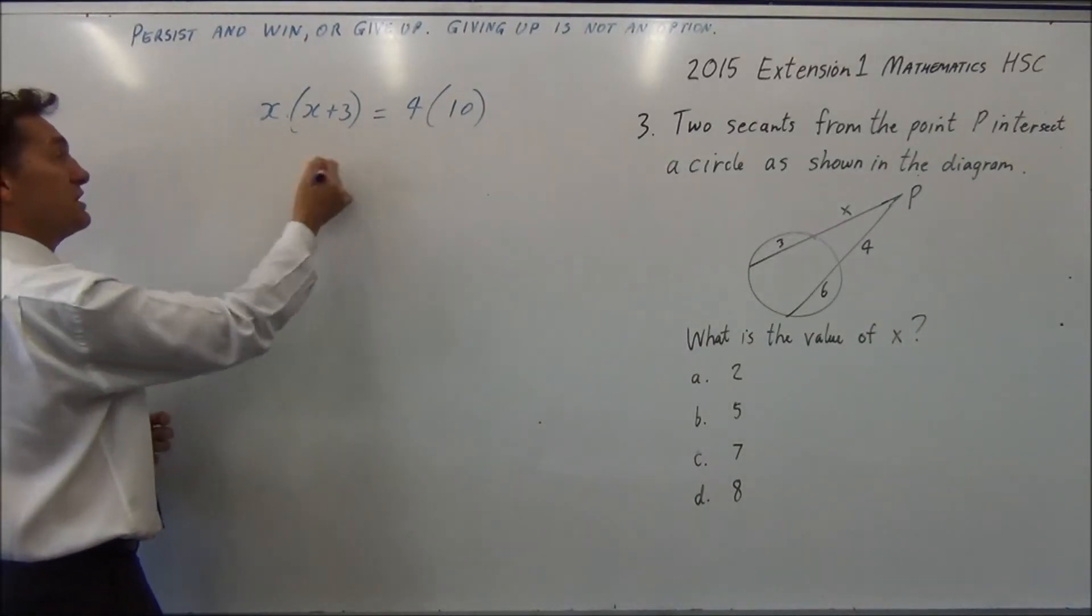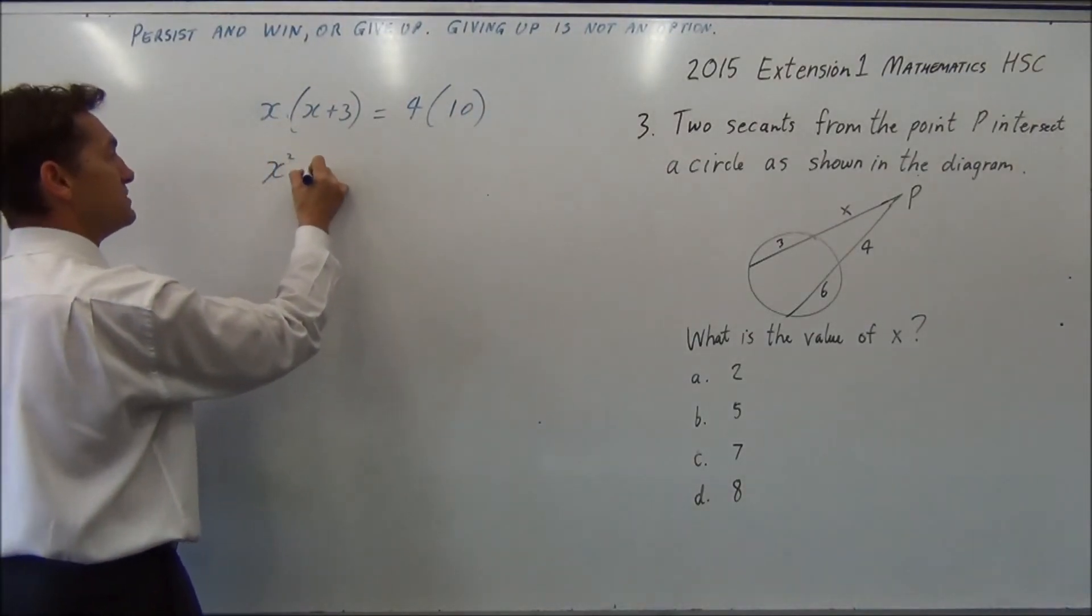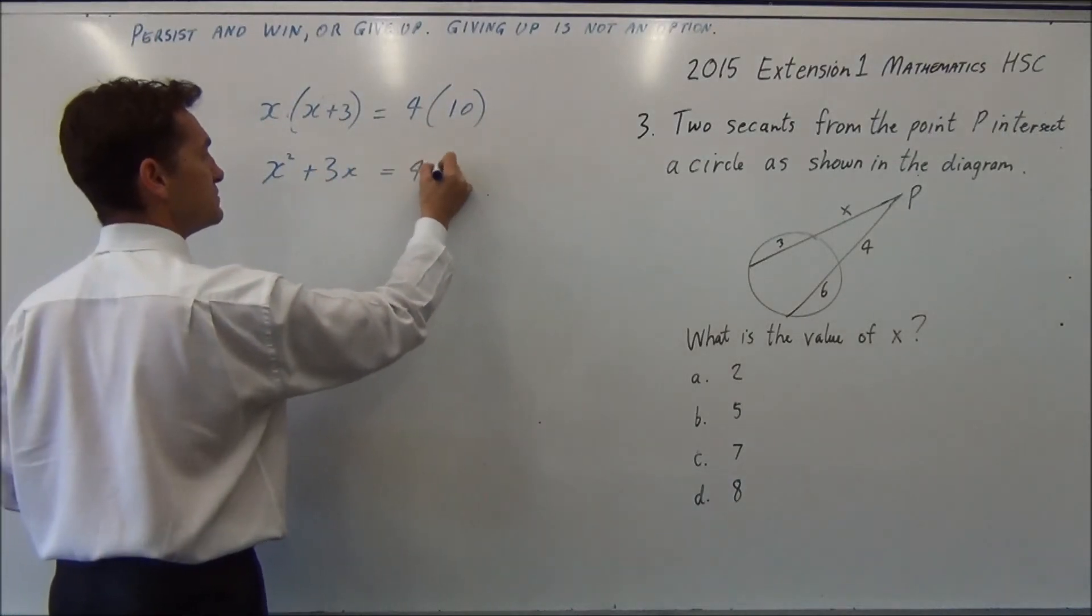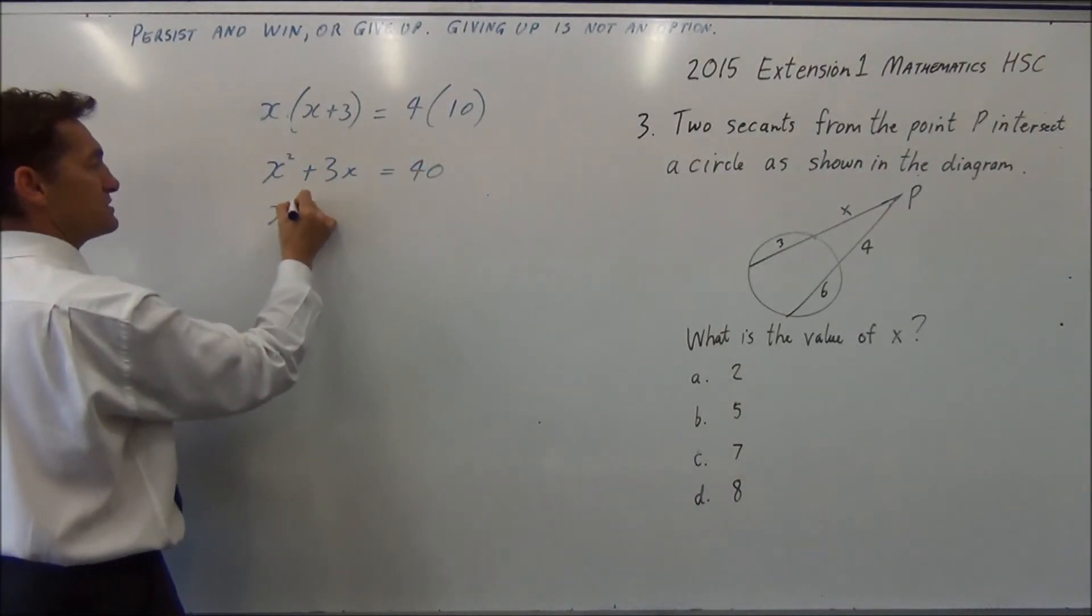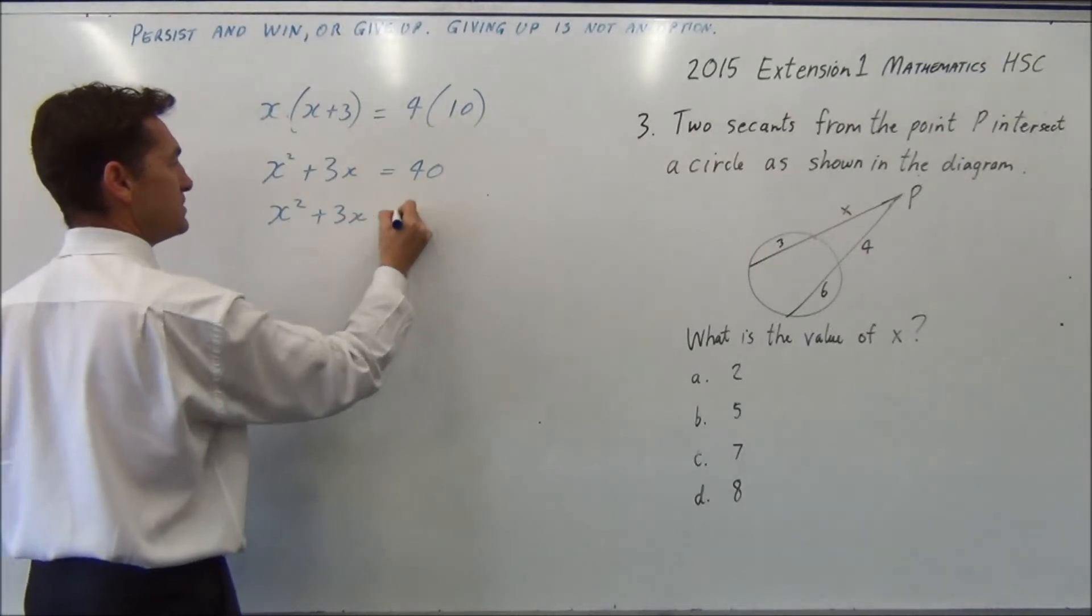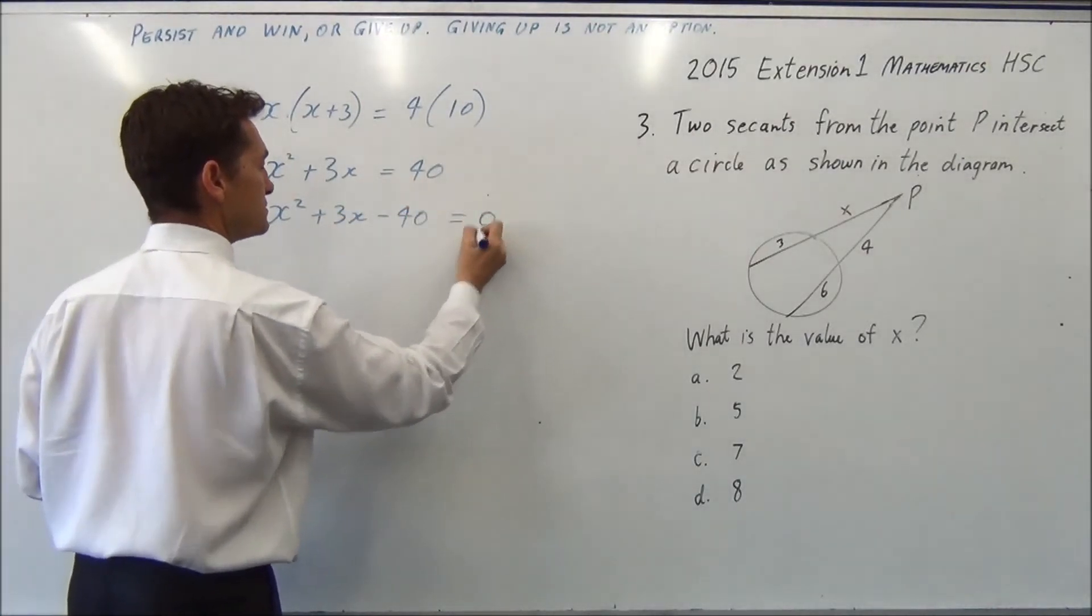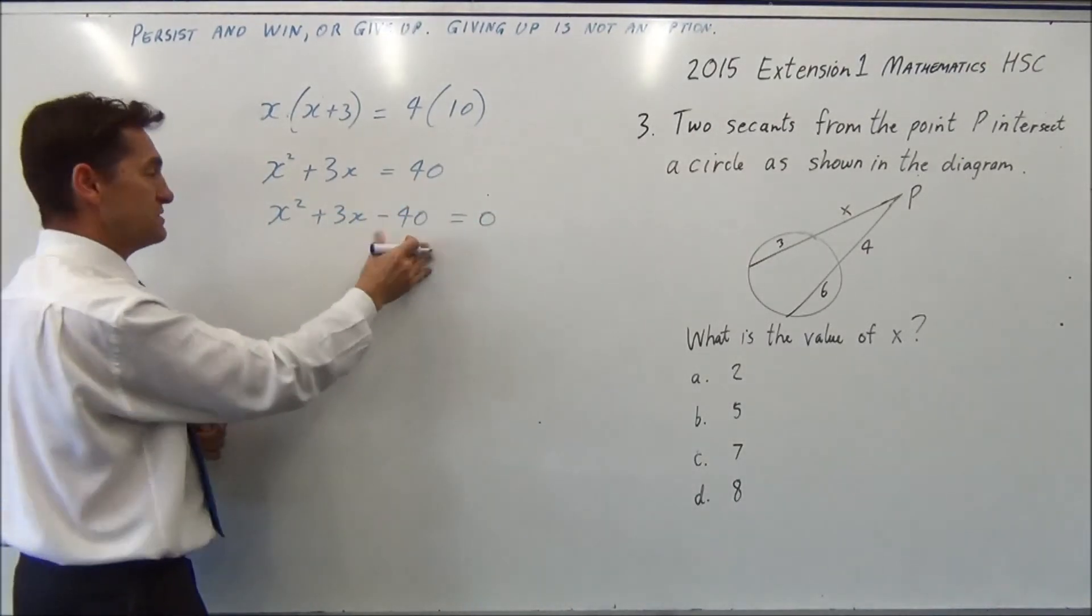So this turns into a quadratic. x squared plus 3x equals 40, or x squared plus 3x minus 40 equals 0.